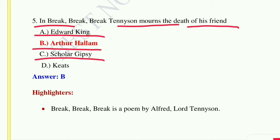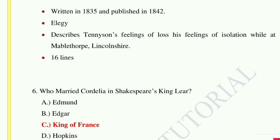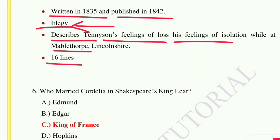Question number five: In 'Break, Break, Break,' Tennyson mourns the death of his friend — option A: Edward King, option B: Arthur Hallam, option C: Scholar Gypsy. The correct answer is Arthur Hallam. 'Break, Break, Break' is a poem by Alfred Lord Tennyson written in 1835 and published in 1842. It is an elegy — meaning poetry written while mourning someone's death. It describes Tennyson's feelings of loss and isolation, and is 18 lines long.